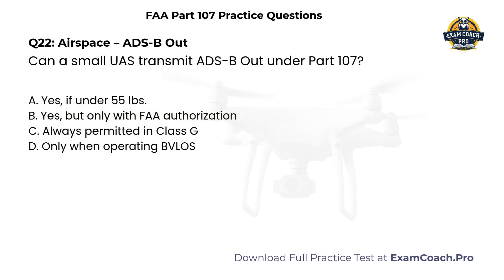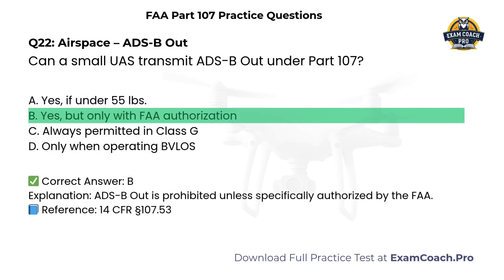Airspace. ADS-B out. Can a small UAS transmit ADS-B out under Part 107? A. Yes, if under 55 pounds. B. Yes, but only with FAA authorization. C. Always permitted in Class G. D. Only when operating beyond visual line of sight. Correct answer: B. ADS-B out is prohibited unless specifically authorized by the FAA.